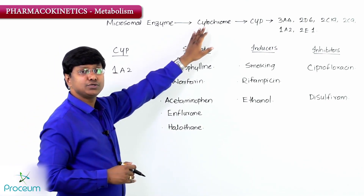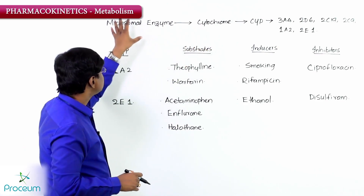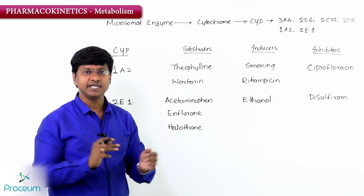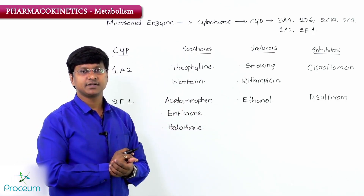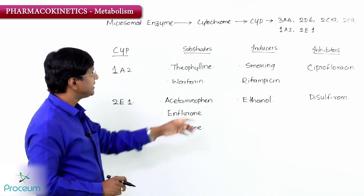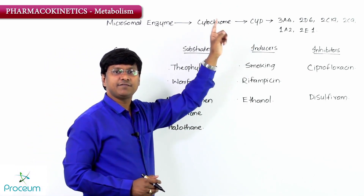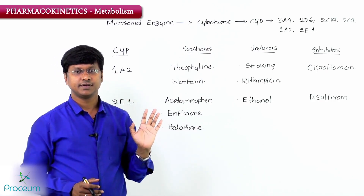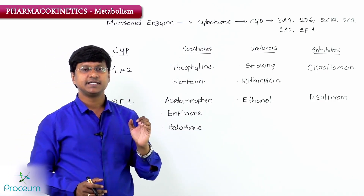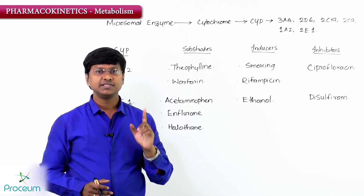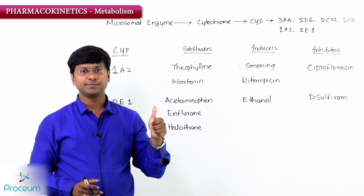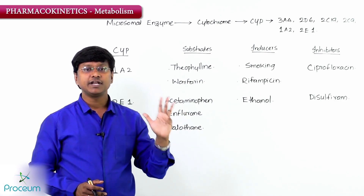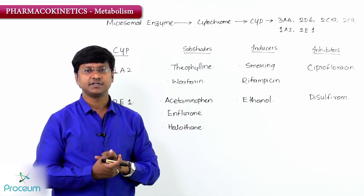This completes the discussion of the cytochrome P450 system, a microsomal enzyme system that metabolizes many drugs. CYP3A4 is the most important, metabolizing 50% of drugs. In pharmacokinetics, we have now covered absorption, distribution, and metabolism. Next, we will discuss the excretion of drugs.